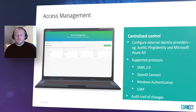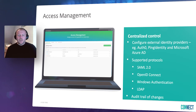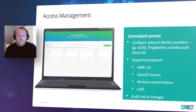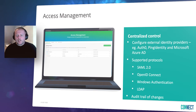Access management centralizes the configuration of authentication across all of Tridion. This allows for a much smoother and safer experience for practitioners because it enables single sign-on and, optionally, multi-factor authentication if the configured identity provider supports that. The Administration User Interface allows you to configure external identity providers such as Auth0, Ping Identity, and Microsoft Azure AD, supporting protocols including SAML 2.0, OpenID Connect, Windows Authentication, and LDAP. Tridion also keeps an audit trail of changes made to the identity provider settings and user profiles so you can always see who has changed what and when.